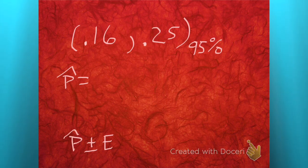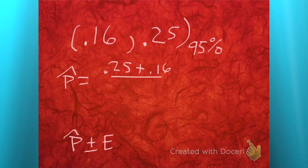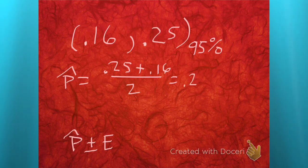In order to find the value in between those two, we just average them. That's 0.25 plus 0.16 divided by 2. So we pound that out: 0.205. That's our p-hat right there.